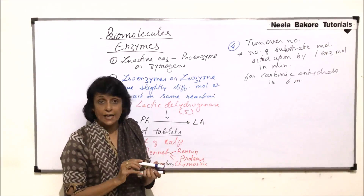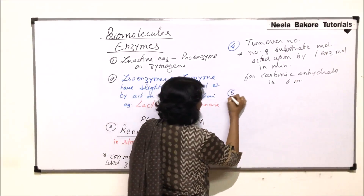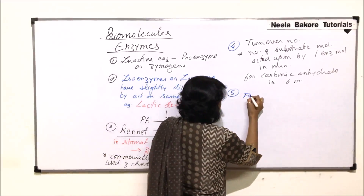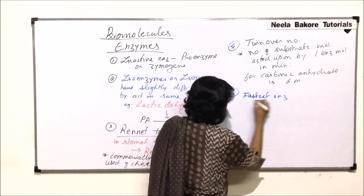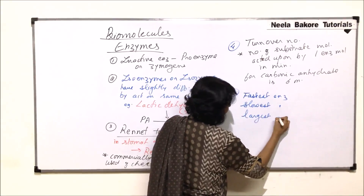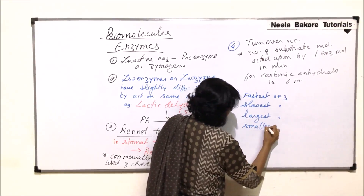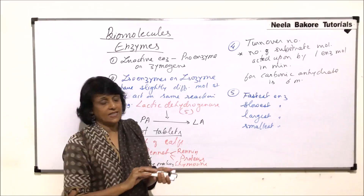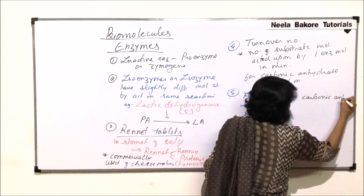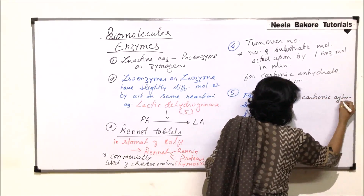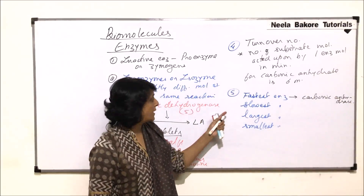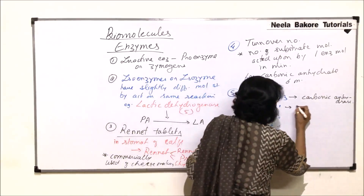As we are talking about carbonic anhydrase, we will discuss four categories: fastest enzyme, slowest enzyme, largest enzyme, and smallest enzyme. The fastest enzyme is carbonic anhydrase, which helps in both the formation and breakdown of carbonic acid.